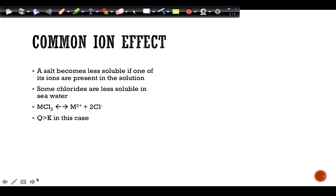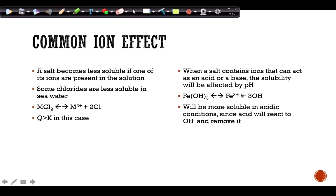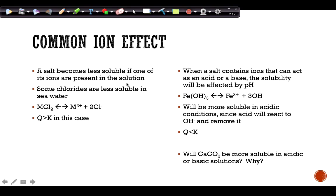When a salt contains ions that can act as an acid or base, solubility is affected by pH. For iron hydroxide: if you dissolve it in acid, H⁺ reacts with the hydroxide ions, pulling them out of solution. This makes Q less than K, so the reaction shifts toward products — meaning more iron hydroxide dissolves. Acidic conditions increase its solubility.